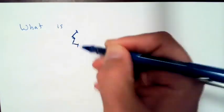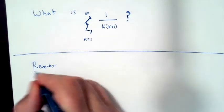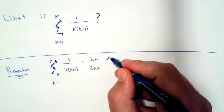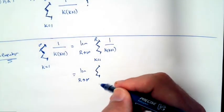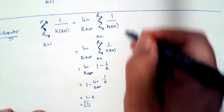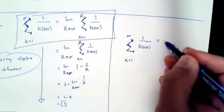Now what if we are considering an infinite sum, the sum from k equals 1 to infinity of 1 over k times k plus 1? Remember that this is the same thing as taking the limit as r approaches infinity of the sum from k equals 1 to r of 1 over k times k plus 1. That expression is the same as 1 minus 1 over r, and taking the limit as r goes to infinity, the 1 over r becomes 0. So this expression is equal to 1.